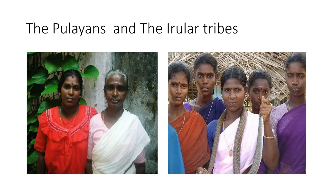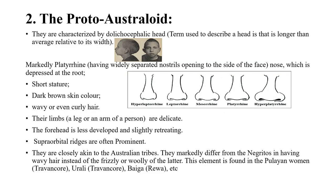Coming to the second classification: Proto-Australoid. These are characterized by dolichocephaly — a head which is longer than average relative to its width. As you can see in the image, the head is much longer compared to the normal width of any head shape. People of this race are characterized by these features.